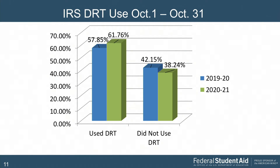Looking at IRS DRT usage for the month of October, comparing 19-20 to 20-21, we've seen a 4% increase. Based on about 2.4 million applications, about 62% used the IRS DRT. Of the 38% that didn't use the tool, a subset of that population wasn't eligible to use it.